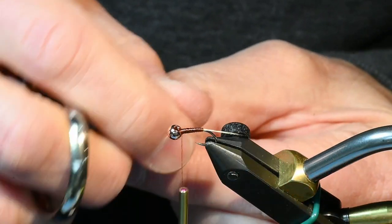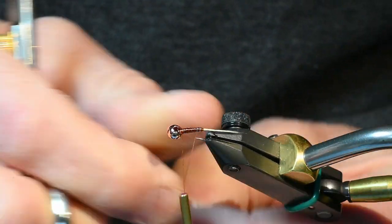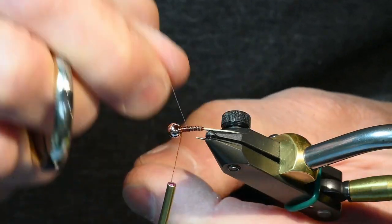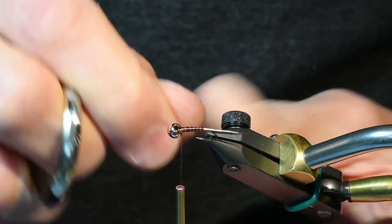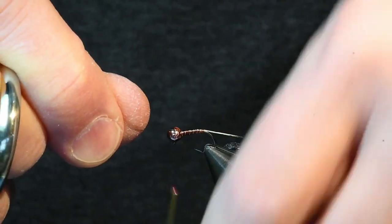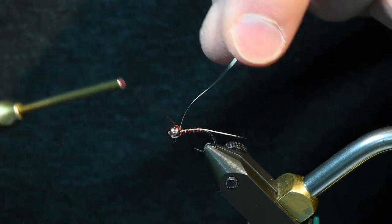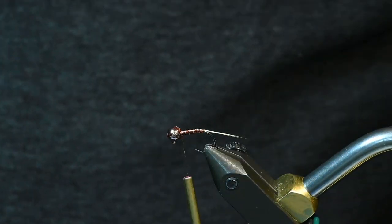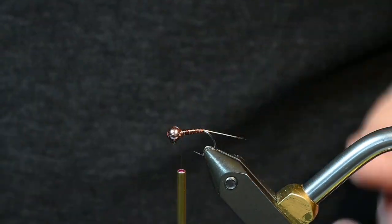I will wrap about six turns and this creates some segmentation. I make a couple of wraps, actually three wraps over the top and two in front. And then I'll just point that down.